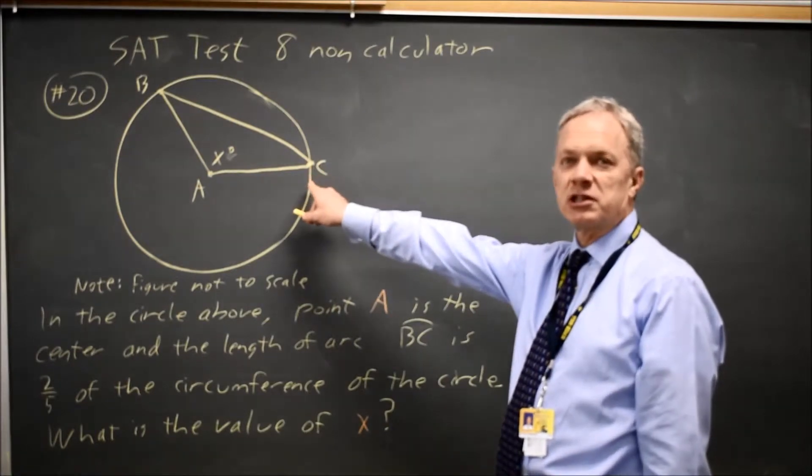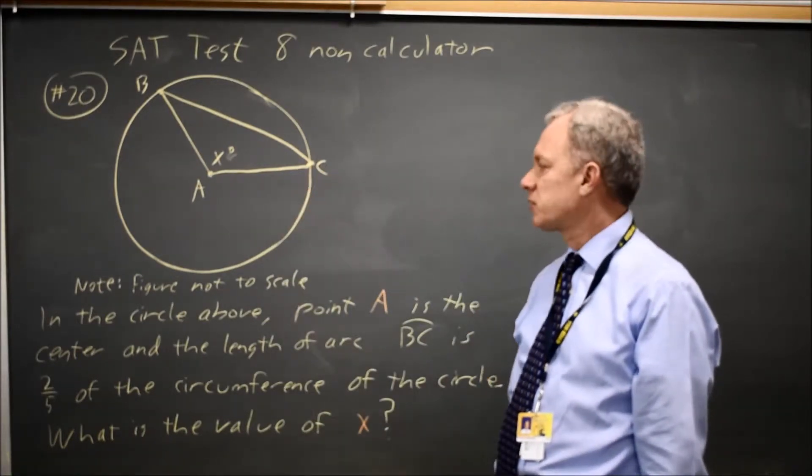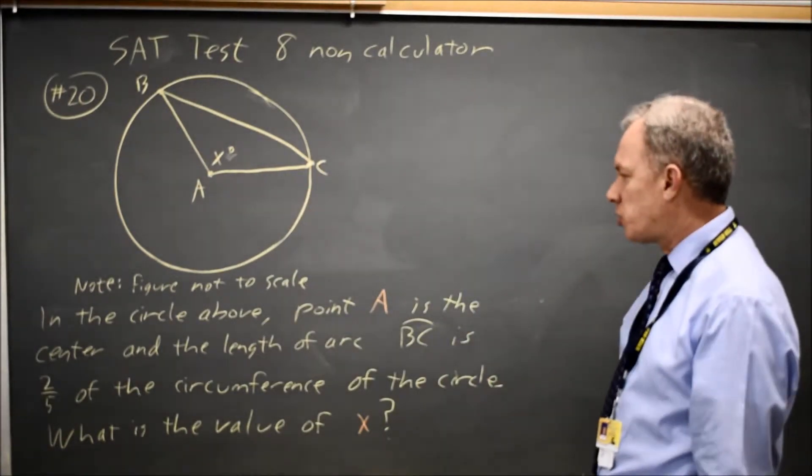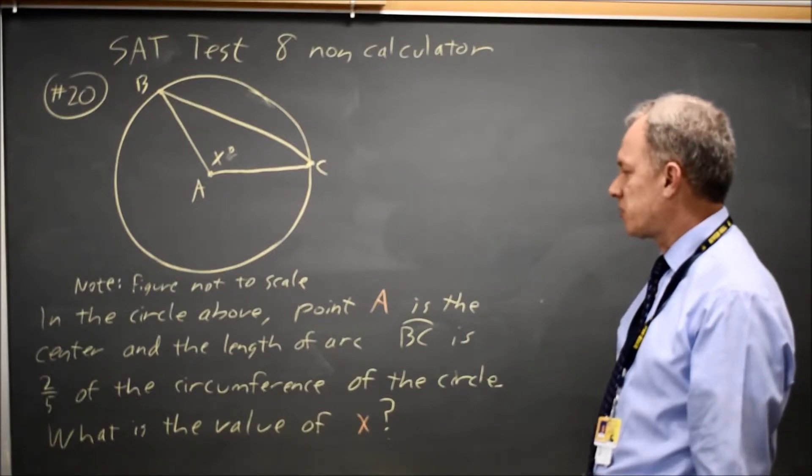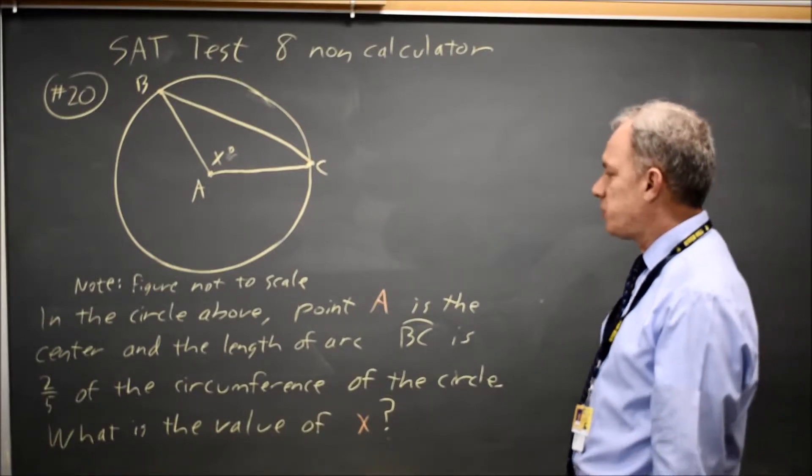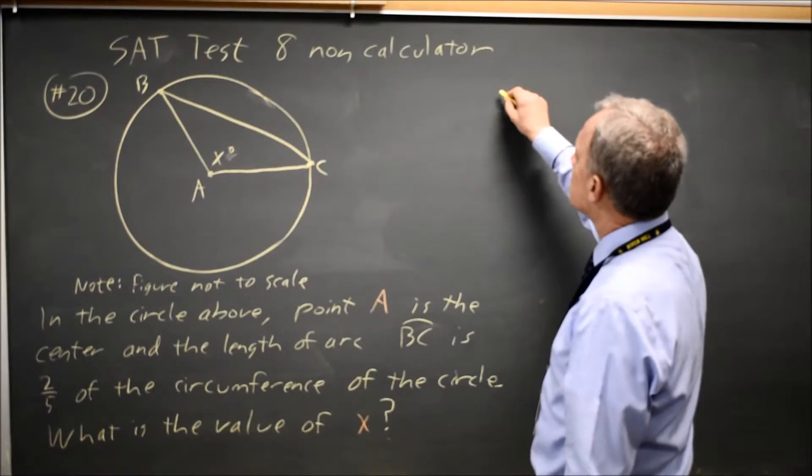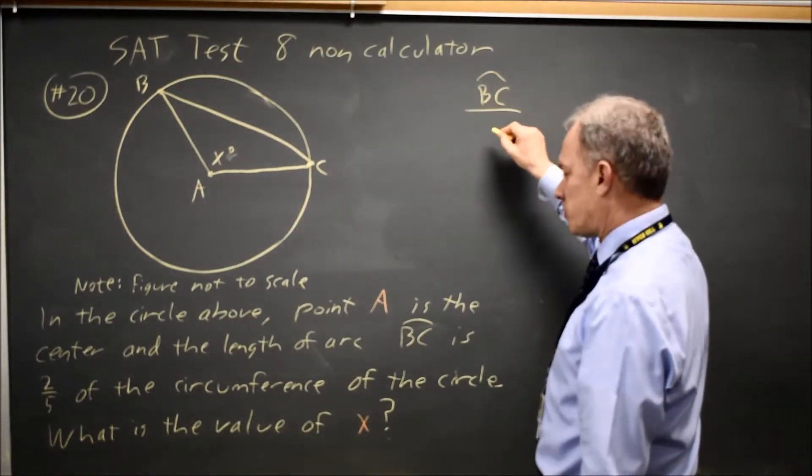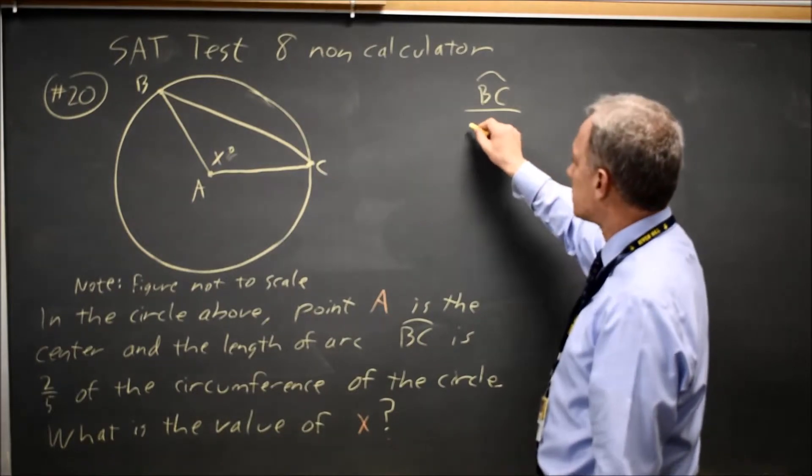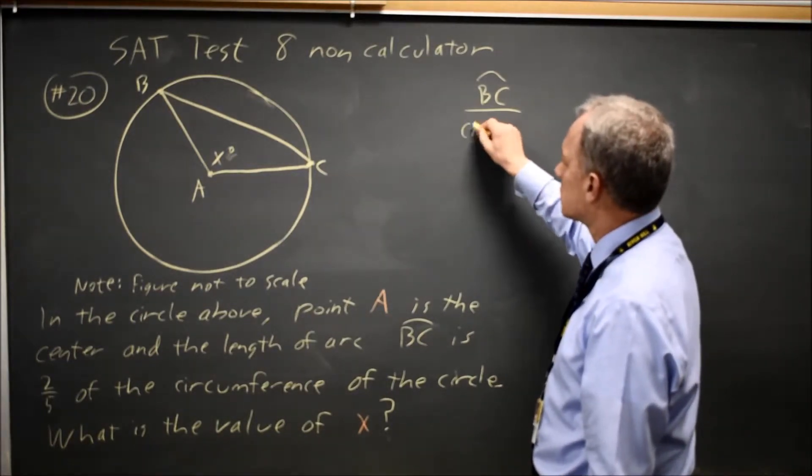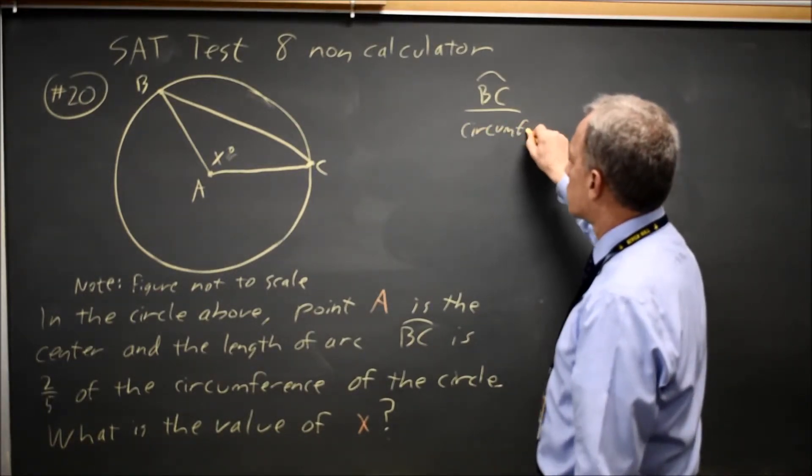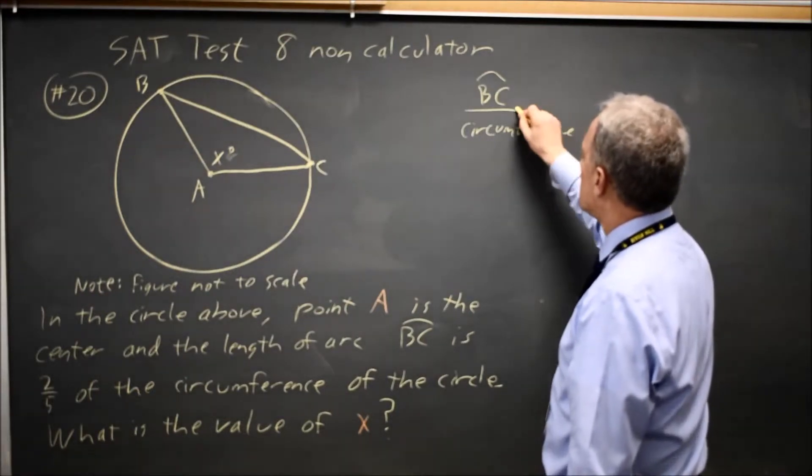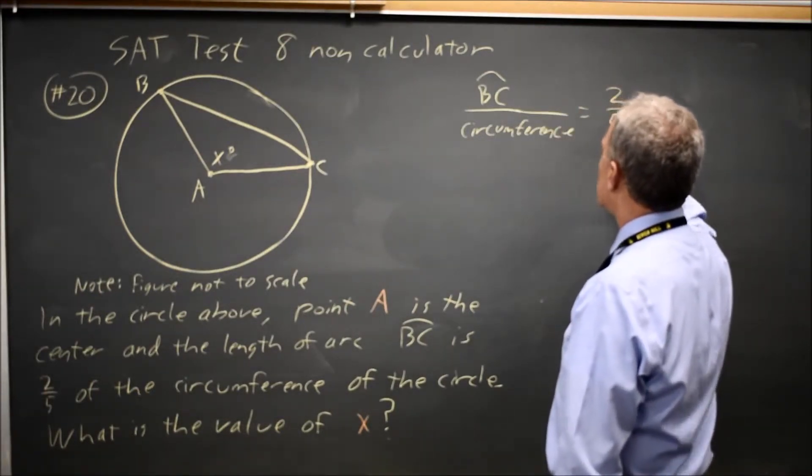In this case, first this figure is not to scale, so you can't estimate x from the picture. But they say point A is the center, so we have the central angle, and the length of arc BC over the entire circumference is 2 over 5.